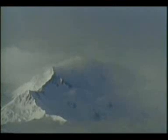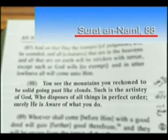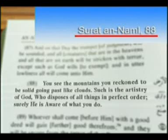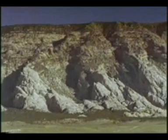In one of the verses, we are informed that the mountains are not motionless as they seem, but that they are in constant motion: 'You see the mountains you reckoned to be solid going past like clouds. Such is the artistry of God, who disposes of all things in perfect order. Surely he is aware of what you do.' This motion of the mountains is caused by the movement of the earth's crust that they are located on. The earth's crust sort of floats over the mantle layer, which is denser.